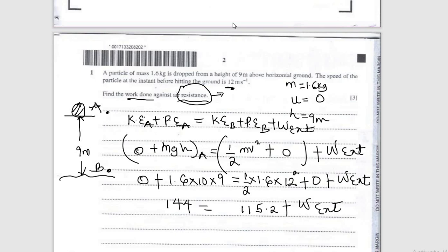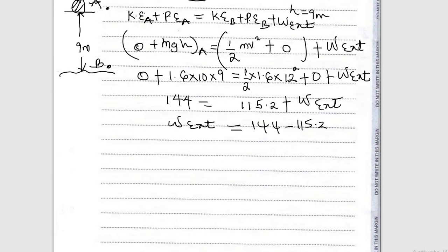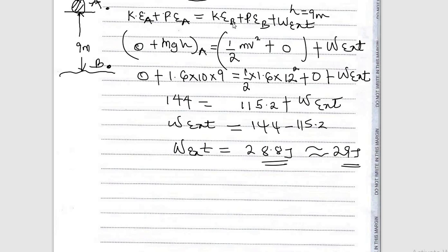So work done against external forces — the resistive force — is 144 minus 115.2, which gives us 28.8 J. It can be approximated to 29 J. That's the work done against resistive forces. Let's move to the next question.